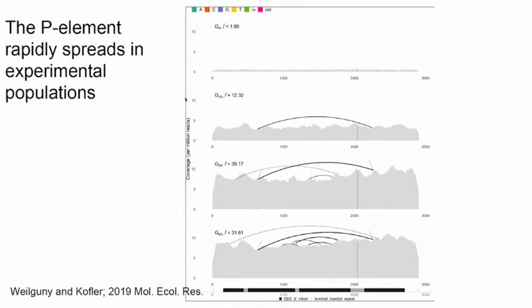Apart from the increase in coverage and copy number, we also see this distinctive SNP at position 2040, which is specific to simulans — melanogaster doesn't have it. And another thing we see is these arcs arising — these represent internal deletions. So we get a lot of internal deletions in a very short time. This is a nice way of visualizing an invasion: you see the copy number increase and a lot of internal deletions popping up.